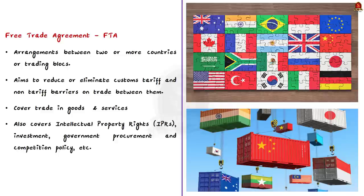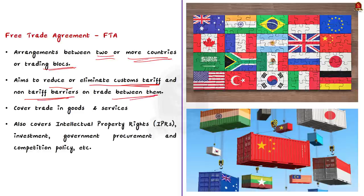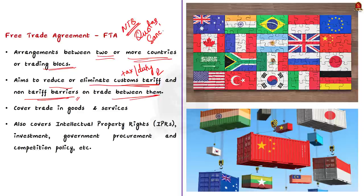What are free trade agreements? Free trade agreements are agreements between two or more countries or trading blocks. These agreements primarily aim to reduce or eliminate customs tariffs and non-tariff barriers on trade between them. Tariff barriers are the tax or duty imposed on goods which are traded to or from abroad. A non-tariff barrier, on the contrary, is a way to restrict trade using barriers in a form other than a tariff.